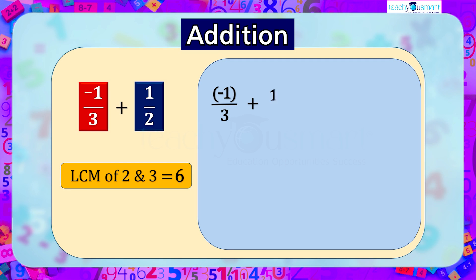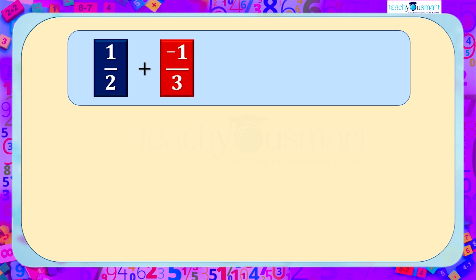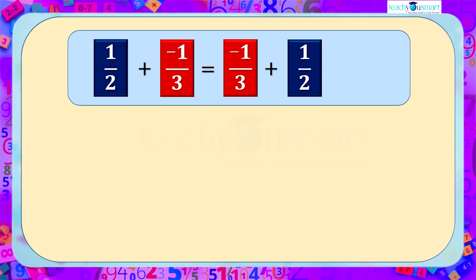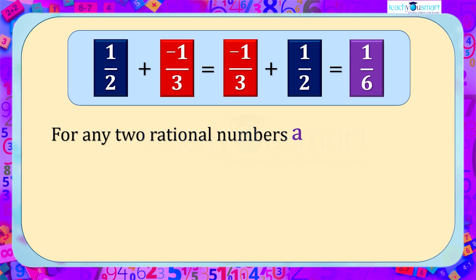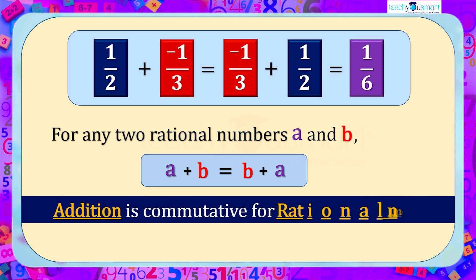Now reversing the order: minus one by three plus one by two equals minus two by six plus three by six, which equals minus two plus three whole divided by six, equal to one by six. That is, one by two plus minus one by three equals minus one by three plus one by two, both equal to one by six. Changing the order of numbers does not affect the result. So for any two rational numbers a and b, a plus b equals b plus a. Therefore addition is commutative for rational numbers.